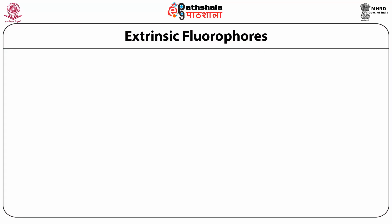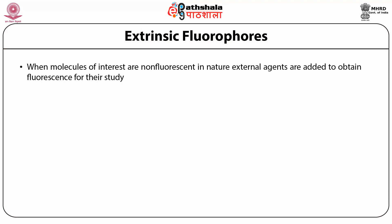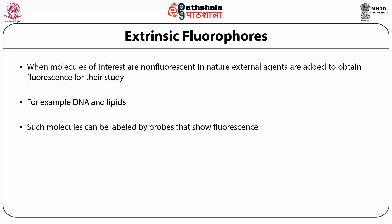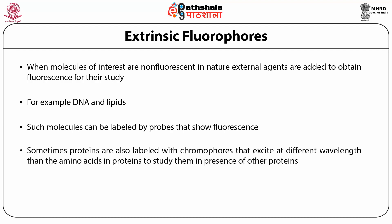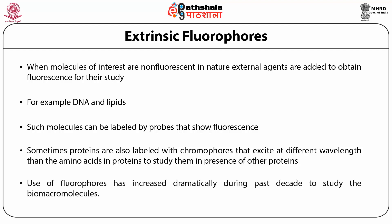Extrinsic fluorophores: when molecules of interest are non-fluorescent in nature, external agents are added to obtain fluorescence for their study. For example, DNA and lipids are non-fluorescent in nature and external agents can be added which bind to them and produce fluorescence. Such molecules can be labeled by probes that show fluorescence. Sometimes proteins are also labeled with chromophores that excite at different wavelengths than the amino acids in proteins, to study them in the presence of other proteins. Use of fluorophores has increased dramatically during past decades to study biomolecules.